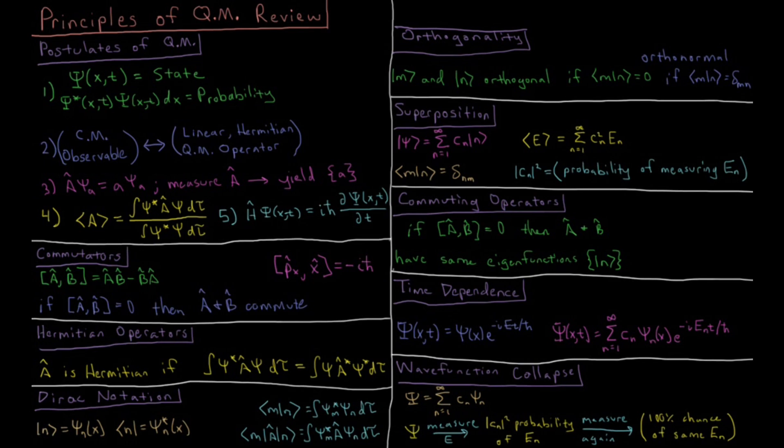This video is a review of the chapter on the principles of quantum mechanics. We start with the postulates of quantum mechanics, which are five general statements that are not proven in any way, but we take to be true and then see what logical consequences they lead to.